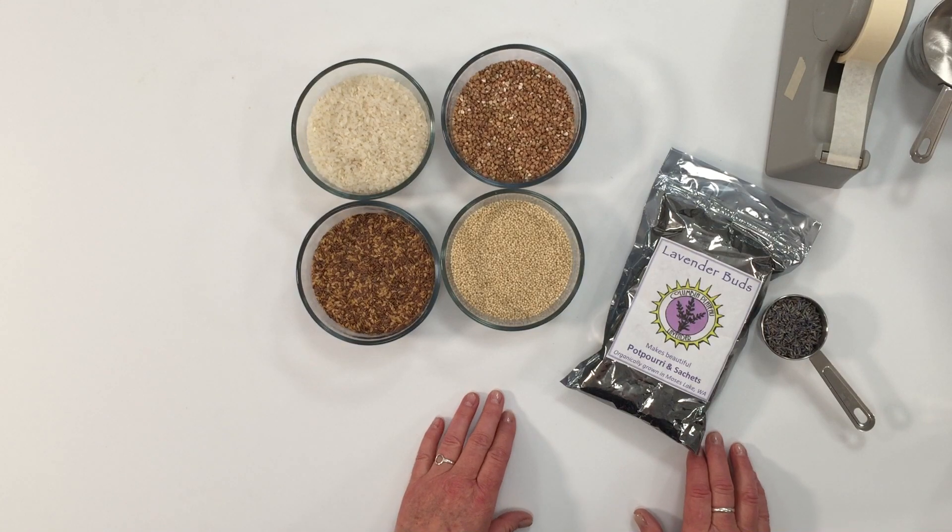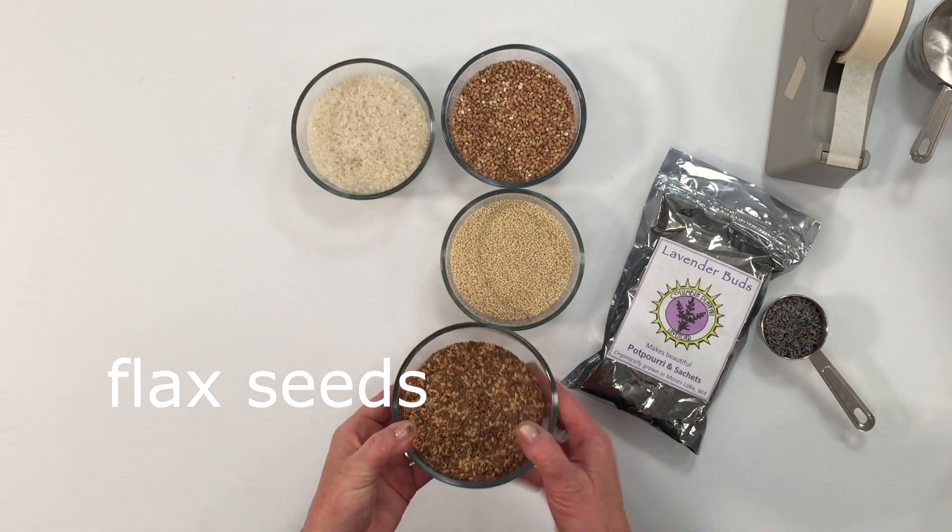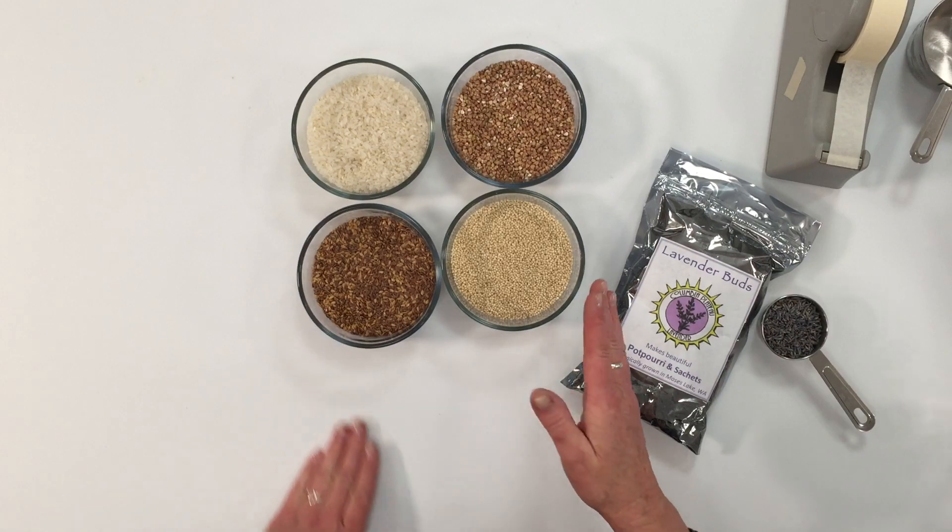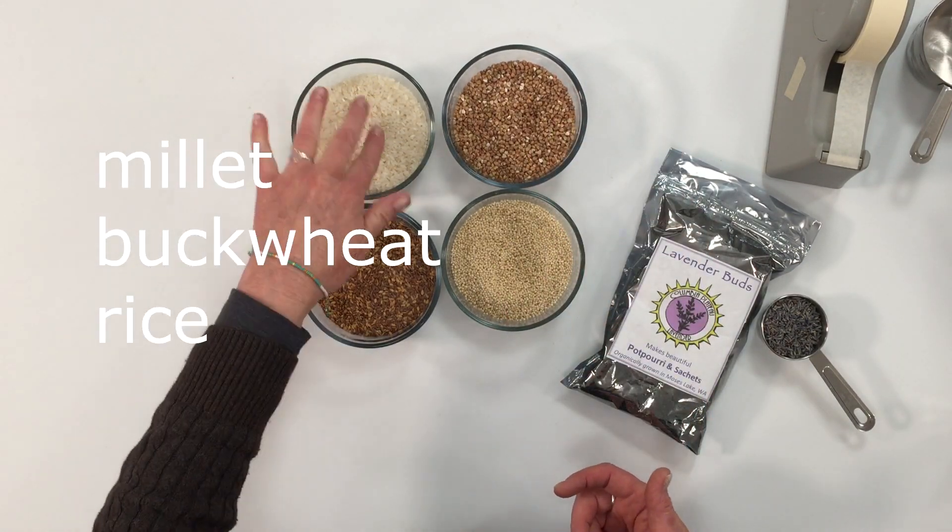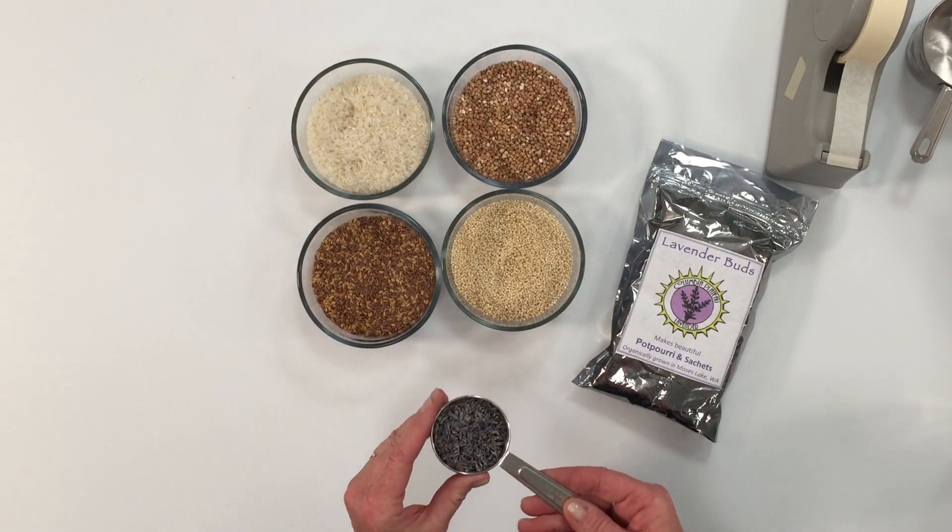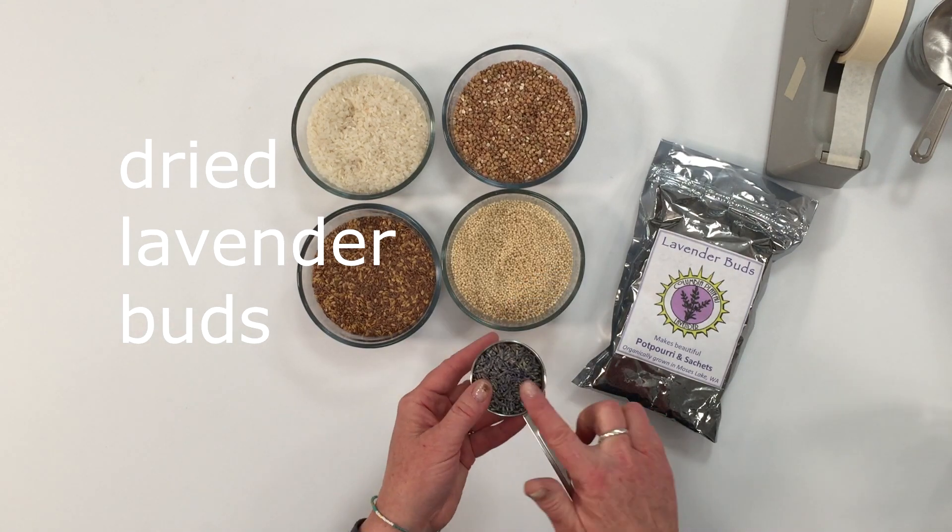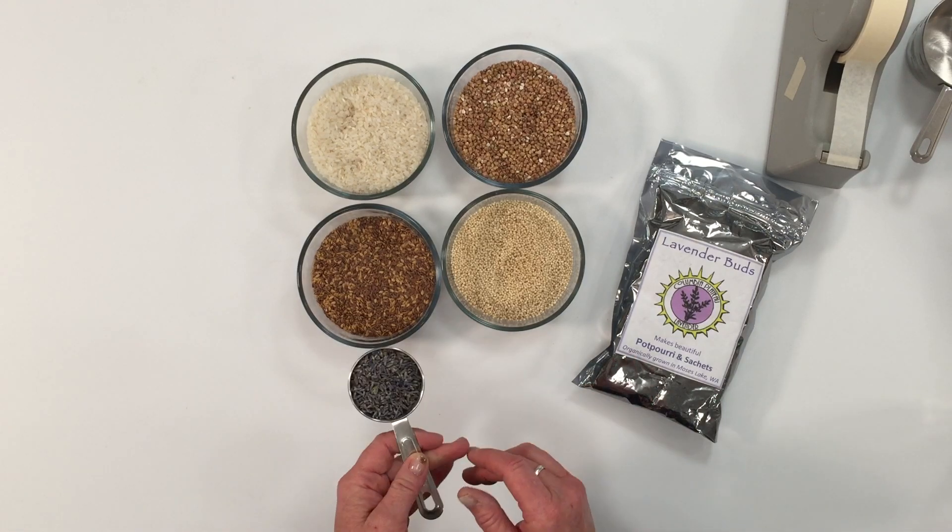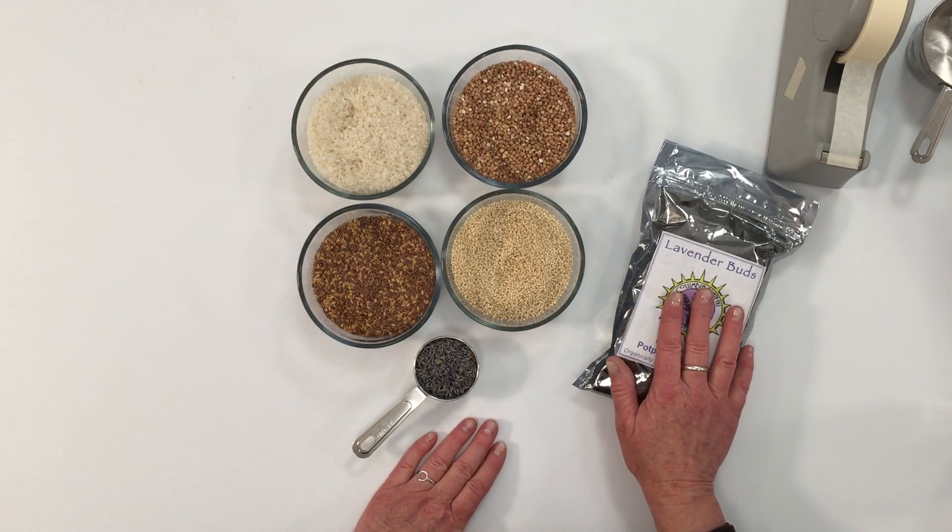You'll also need something to fill the eye pillow with. I have four recommendations. This is flax seed, that's one of my favorites. It doesn't smell when you heat it up. There's millet, buckwheat, or just plain rice. And you'll also, if you want to add a yummy aroma, you can add a quarter cup of dried lavender buds which lasts for a very long time and really adds a lot of goodness and relaxation to your eye pillow.